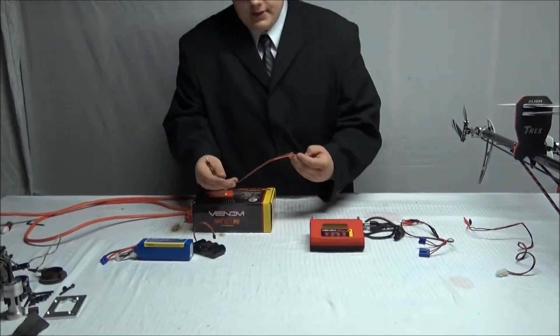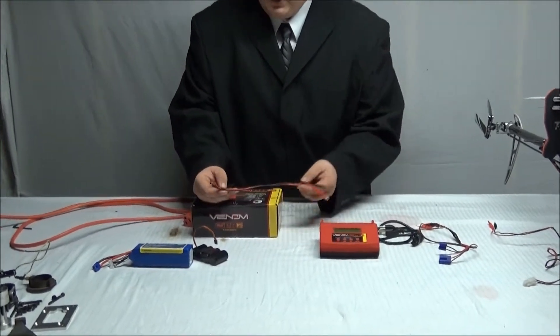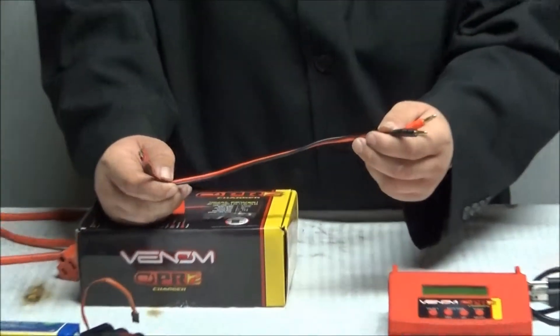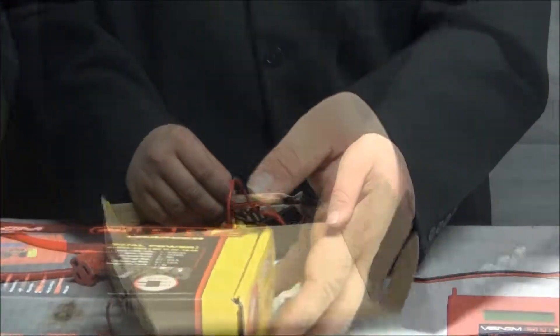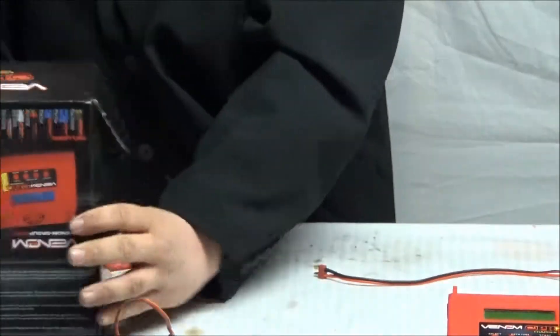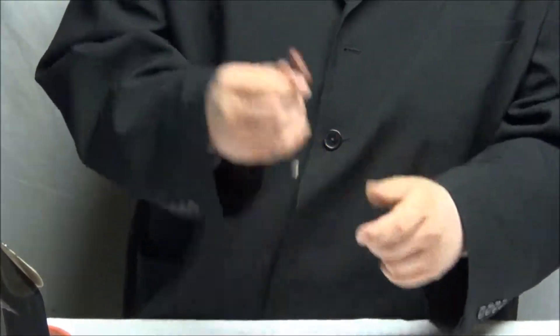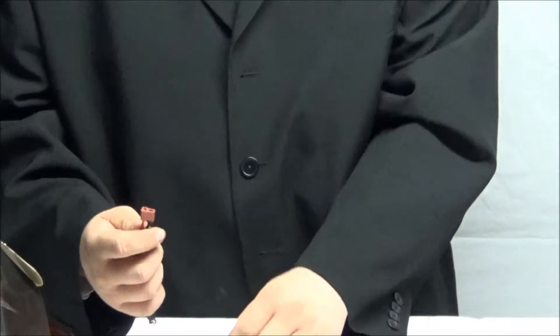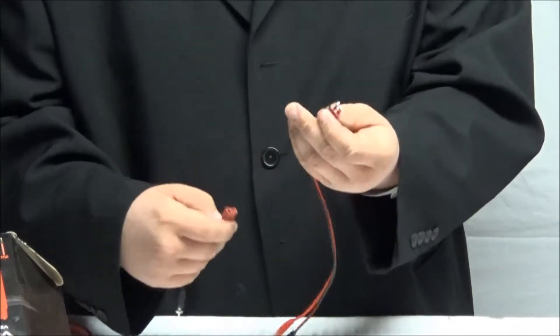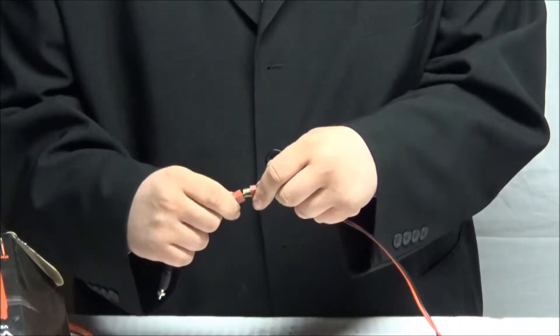So here's basically what they call the master plug, if you will. It's just a Deans to bullet connector. But here's what they give - they give you a whole bunch of stuff like this, which is these little adapters, but they come with a female Deans connector. So what you'll do with the master plug, you can use this as a male Deans, plug this in.